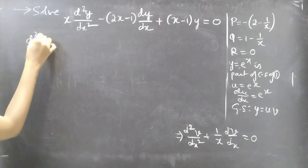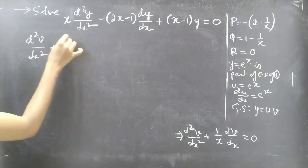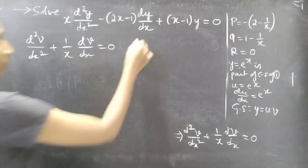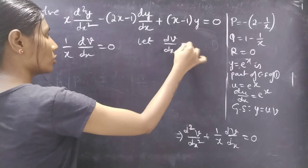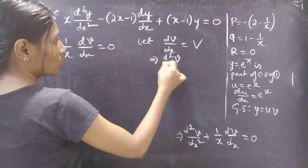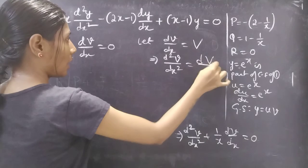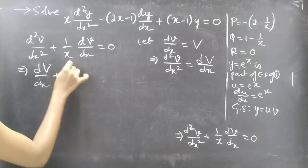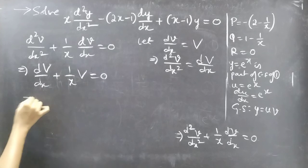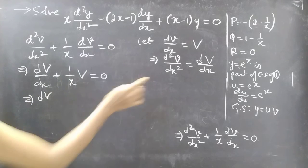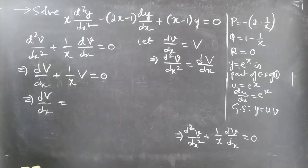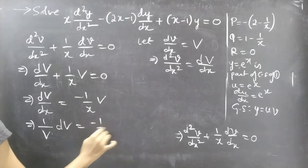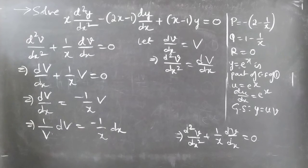We have d²v/dx² + (1/x) dv/dx = 0. Let capital V = dv/dx. Then this equation becomes dV/dx + (1/x)V = 0. Taking the second term to the right-hand side: dV/V = −(1/x) dx. The variables are separable so we can perform integration.